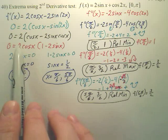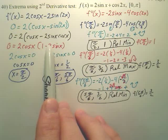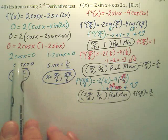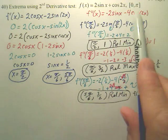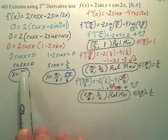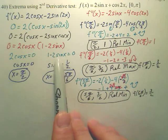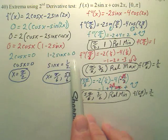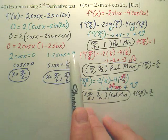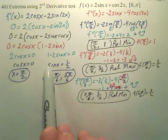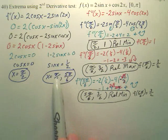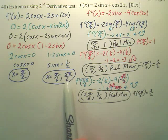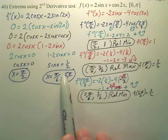Now set each factor equal to zero using the zero product property. Divide the 2 over — what makes cosine x equal zero on this interval? That's pi over 2. What makes the other factor zero? Moving everything over, you get sine x equals 1 half. Using the unit circle, sine x equals 1 half at pi over 6 and 5 pi over 6. So those are your three critical numbers.